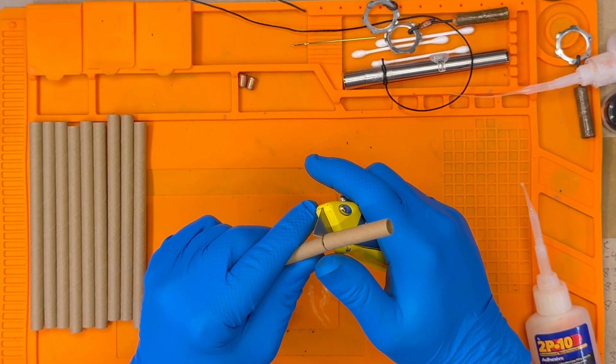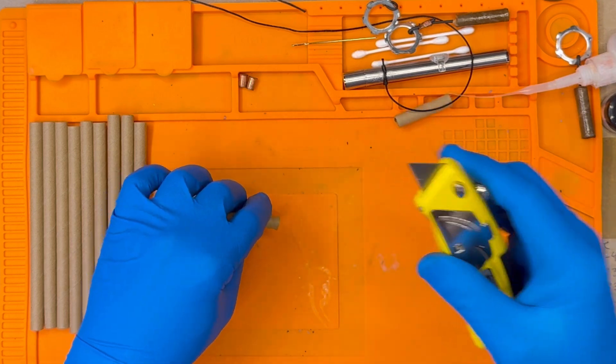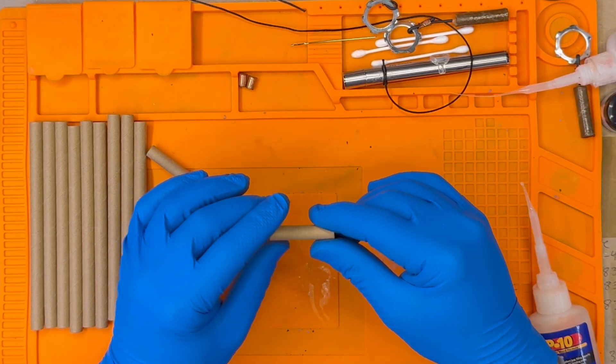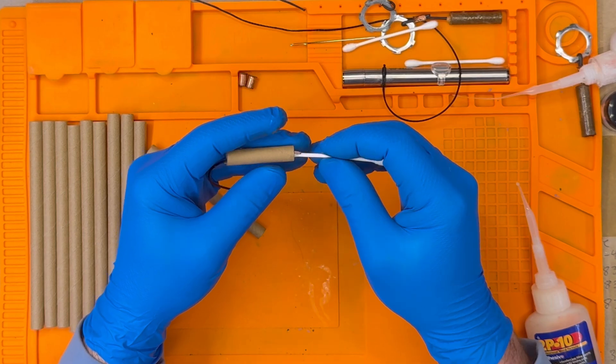We cut a length of cardboard in the same manner as before, perhaps a little bit longer like an inch and a half or so. Then we insert an ignition cup approximately halfway up the tube with a Q-tip.